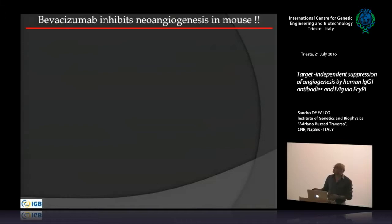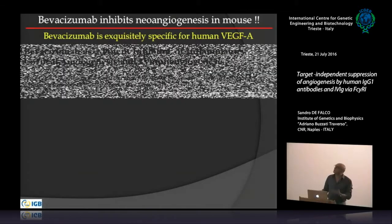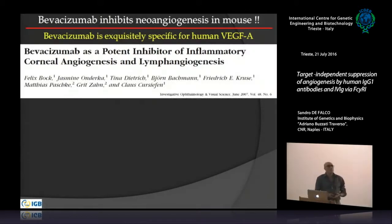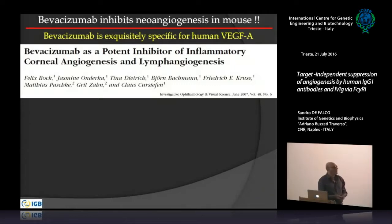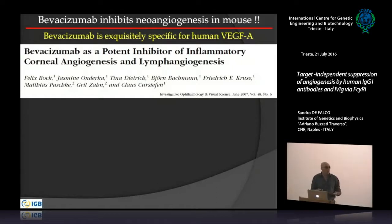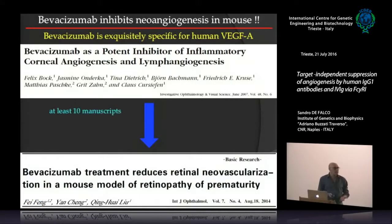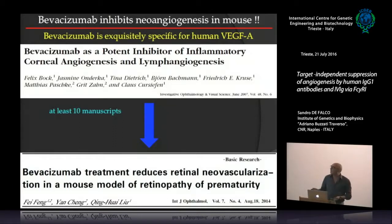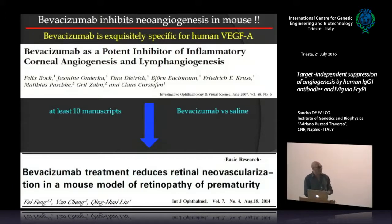We start with this simple observation: bevacizumab, the monoclonal antibody anti-human VEGFA, is specific for human protein and is not able to bind to mouse protein. Despite this fact, there are several papers claiming that bevacizumab works in mice. Unfortunately, in all these papers the control was saline and not an isotype-matched antibody. So we asked how that is possible.